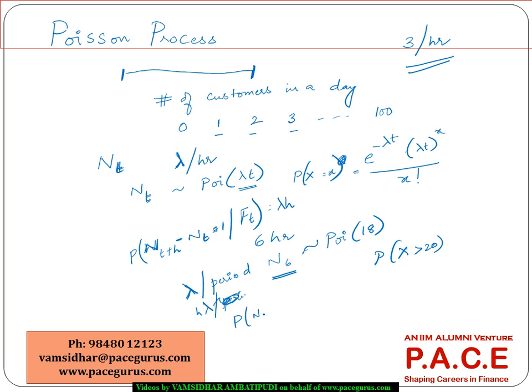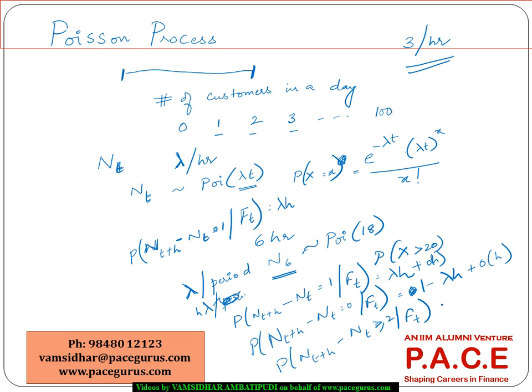So that is where we are saying the probability of nt plus h minus nt is equal to 1 given whatever is the information up to the time period t, this is equal to lambda h. And the probability that the same is equal to 0, like there is no increment during this h time period, we are directly taking it as 1 minus lambda h. But of course, we are giving some small order of h for all these things. And finally, when we are saying nt plus h minus nt greater than or equal to 2, that is very minimal 0 or probably a small order of h kind of stuff. Which means this kind of a process we associate directly to a Poisson process.